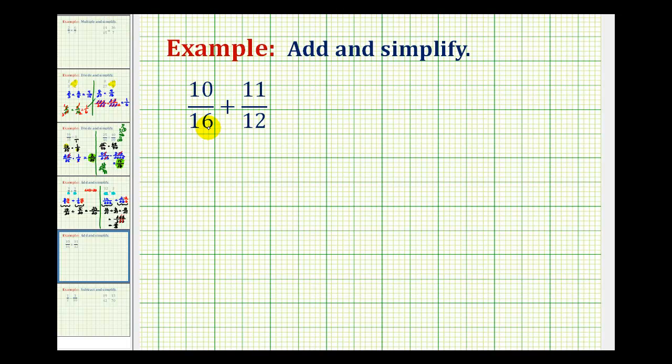Here we want to find the sum of 10 sixteenths and 11 twelfths. But before we try to determine the least common denominator, it might simplify our work a little bit if we notice that this fraction here is going to simplify because it has a common factor of two. So let's do that before we try to determine the least common denominator.